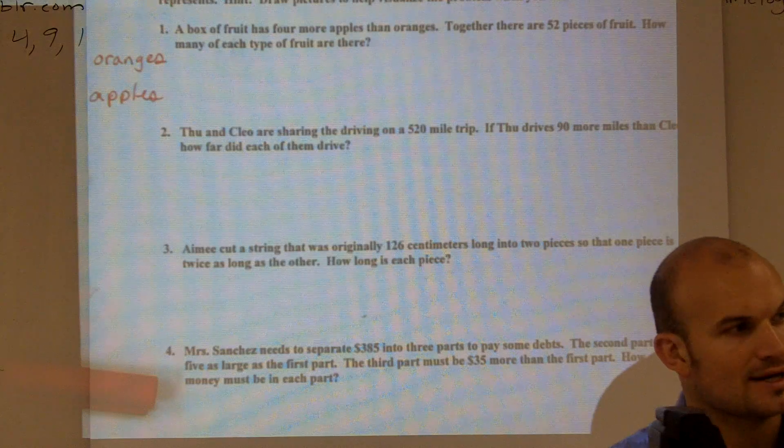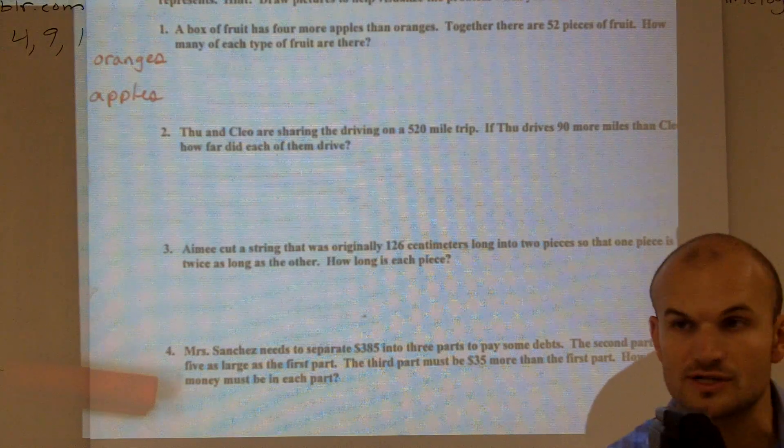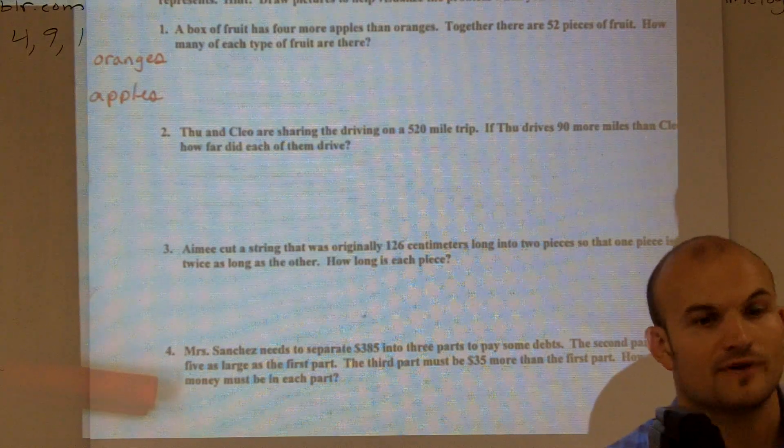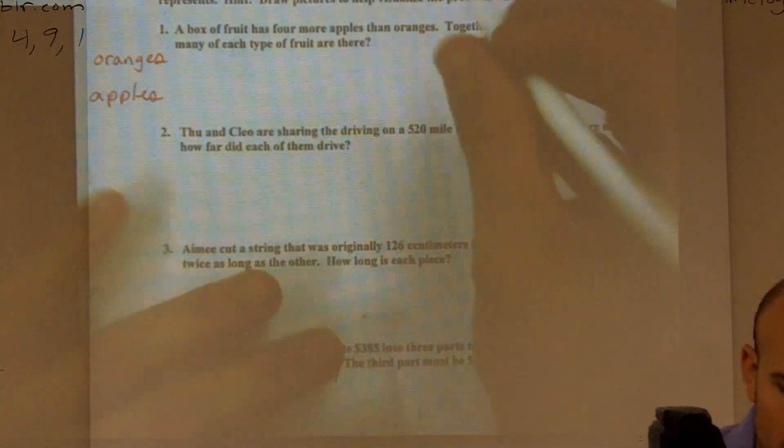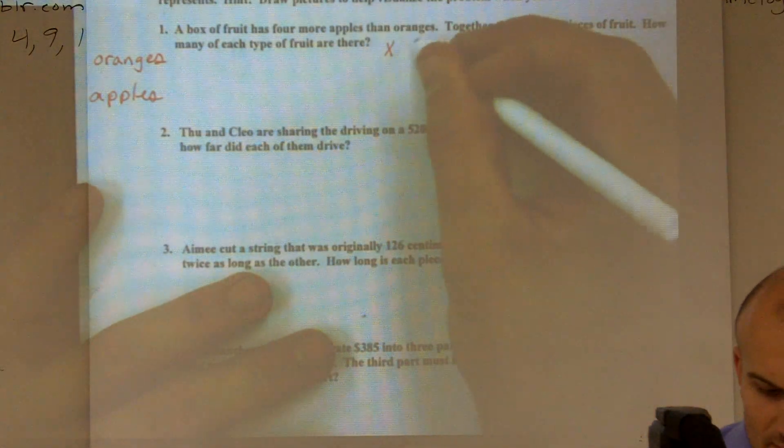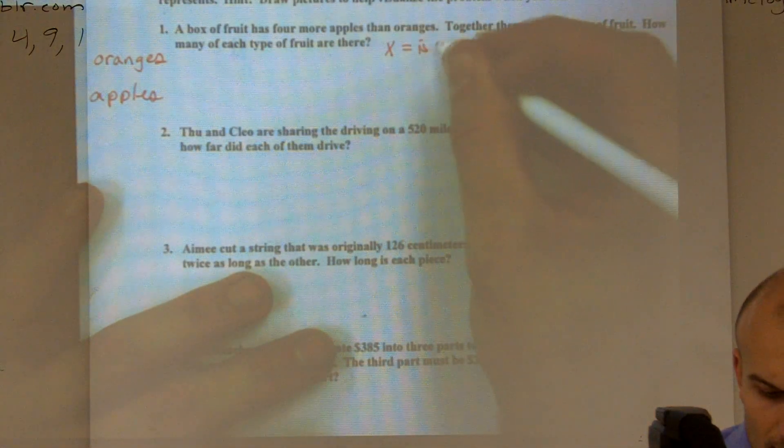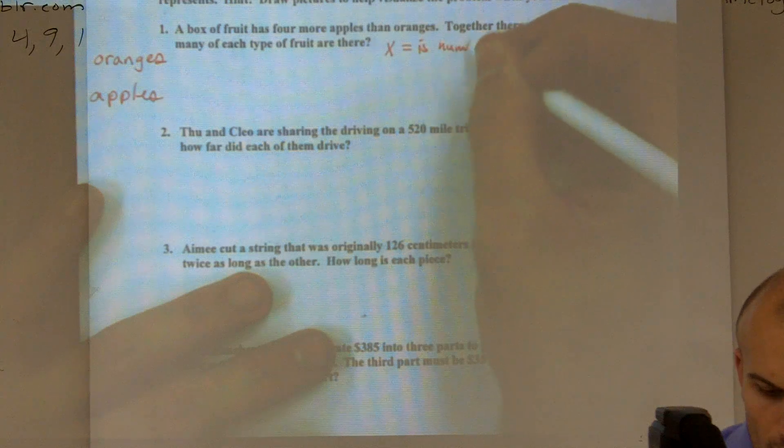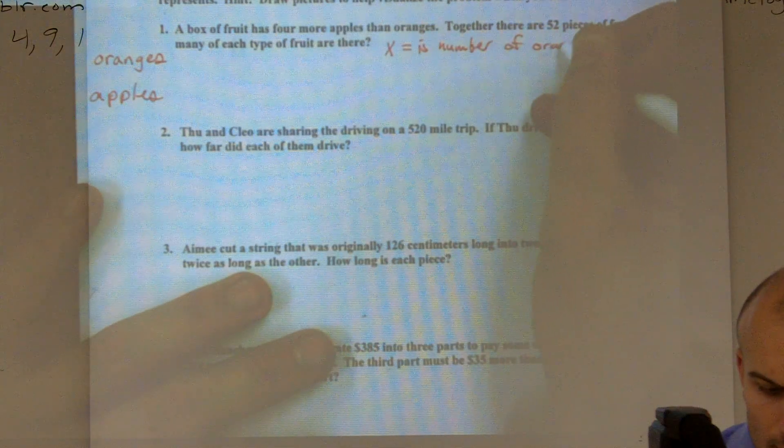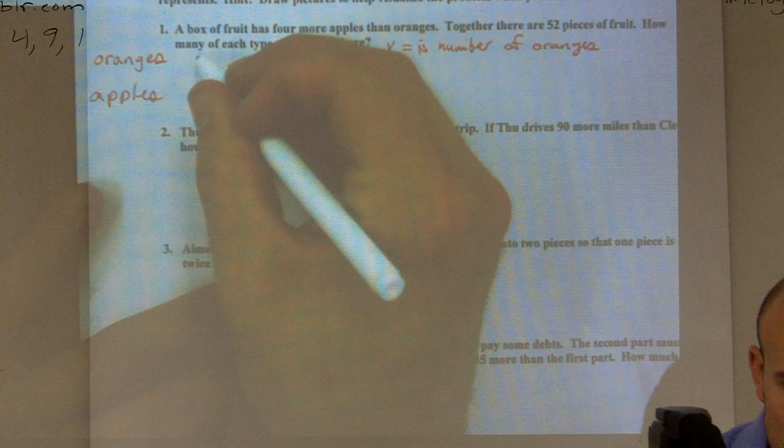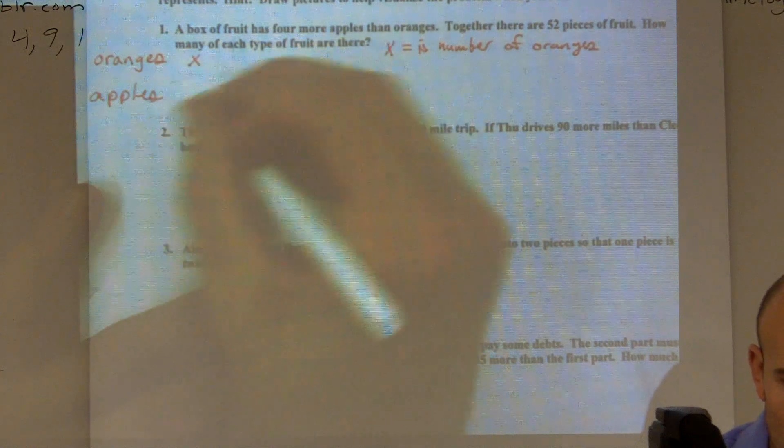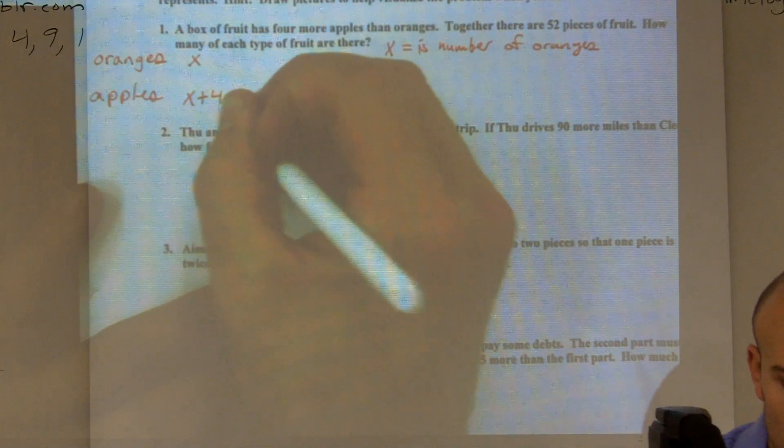So really what I need to do is if I can figure out how many oranges there are, I'll be able to figure out how many apples there are. So I'm going to want to make x, which I'll use my variable, x is the number of oranges. So if I say oranges is equal to x, then apples is going to be x plus four.